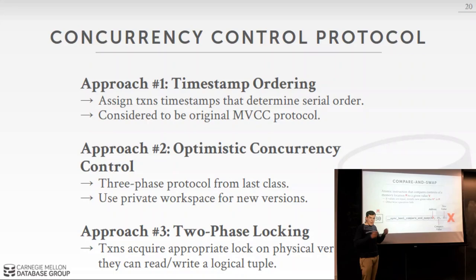The first design decision is the concurrency protocol. There are essentially three approaches: timestamp ordering, OCC, and two-phase locking. There's also a fourth — serializable snapshot isolation (SSI) — which I'll cover in more detail on Monday. I'll skip the detailed discussion of OCC and 2PL since we covered those last class. I want to spend more time on timestamp ordering because that's how MVCC was originally defined in the 1978 paper.